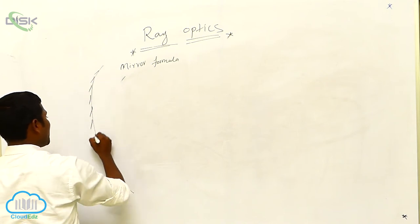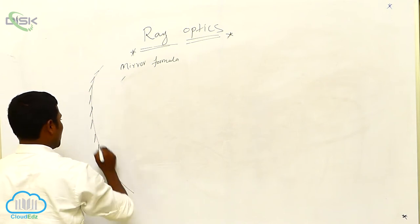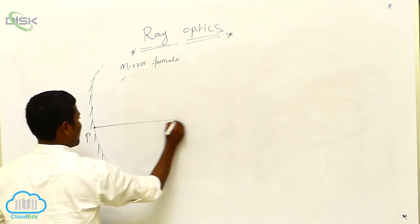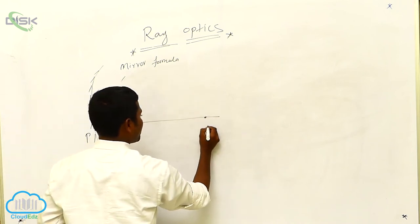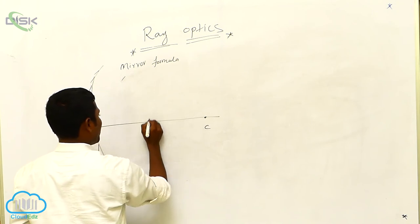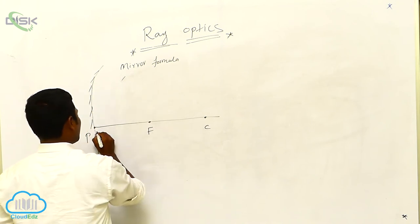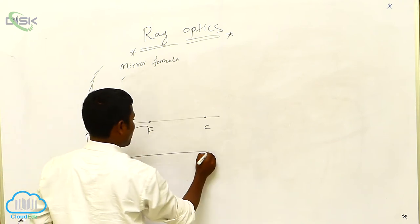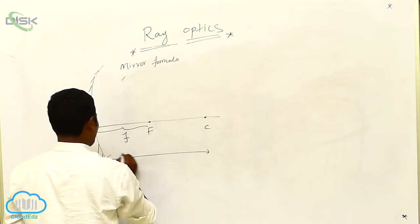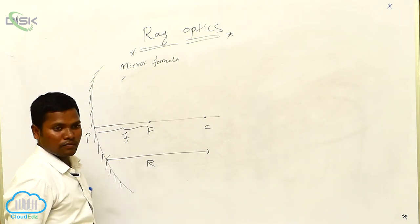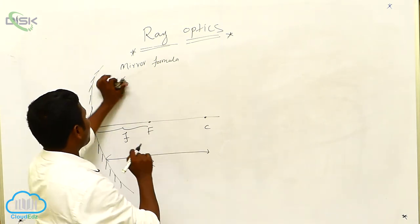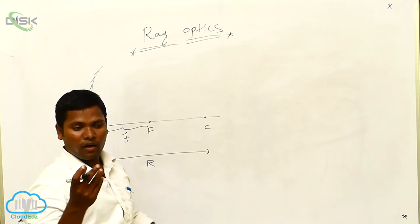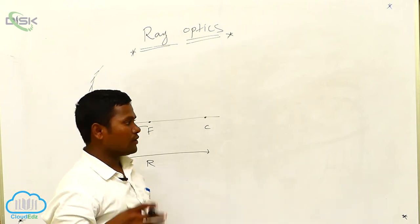This is which mirror? Concave mirror. This is which point? Pole. This line — principal axis. This point — center of curvature. This point — focus. This length, what are you calling? Focal length. This distance, how much? R. Now I have to consider here rays: R1 ray, R2 ray, and R3 ray. If you want to get the image, definitely how many rays you need? Either two or three rays you need.